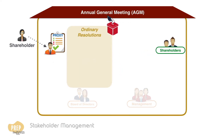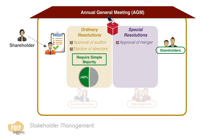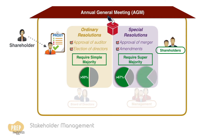Ordinary resolutions, such as approval of auditor and the election of directors, require just a simple majority of the votes cast. Other resolutions that are more material by nature, such as those regarding a merger or takeover, or an amendment of corporate bylaws, are termed special resolutions. Such resolutions may require a supermajority vote, which is typically two-thirds or three-fourths of the votes cast.